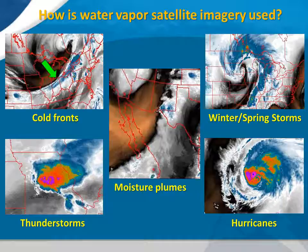Water vapor imagery can help us identify moisture plumes coming in from the tropics, such as the one in the middle image, which can enhance precipitation even as far north as Montana. However, moisture plumes also look a lot like a cold front in water vapor imagery, which is why we sometimes need to use other types of data to determine exactly what we are looking at.